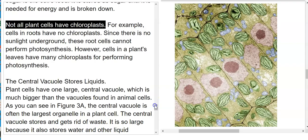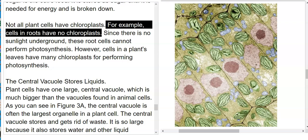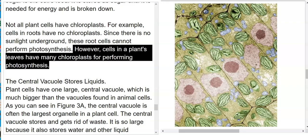Not all plant cells have chloroplasts. For example, cells in roots have no chloroplasts. Since there is no sunlight underground, these root cells cannot perform photosynthesis. However, cells in a plant's leaves have many chloroplasts for performing photosynthesis.